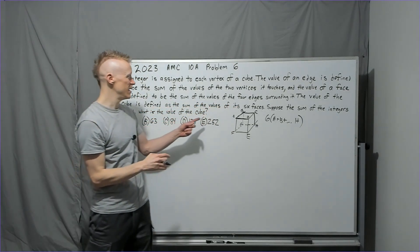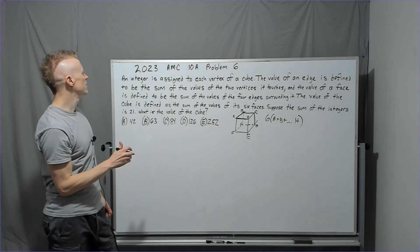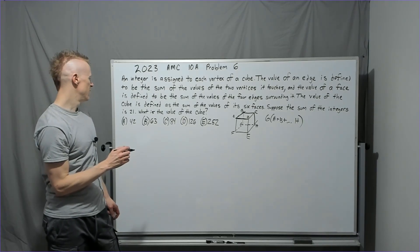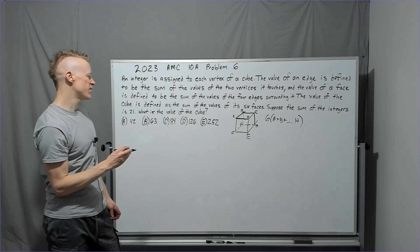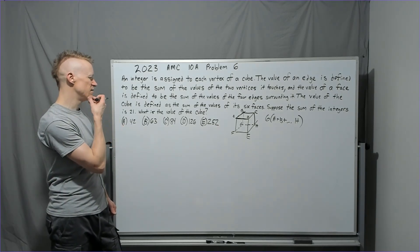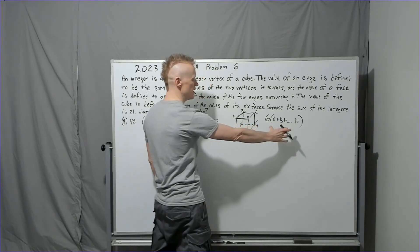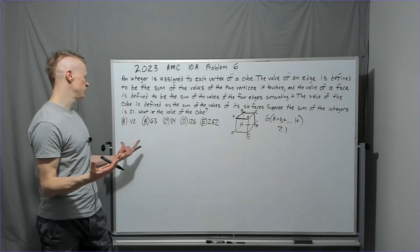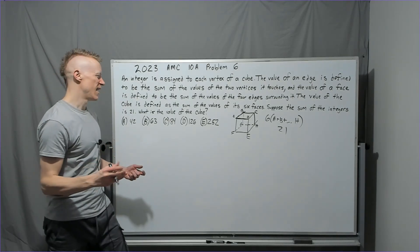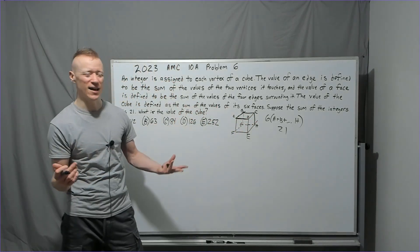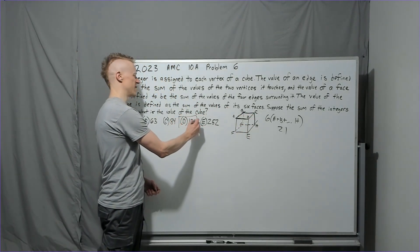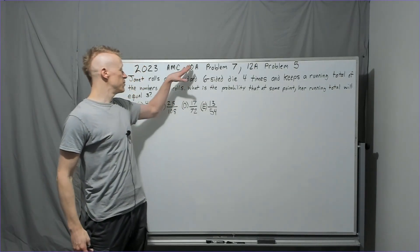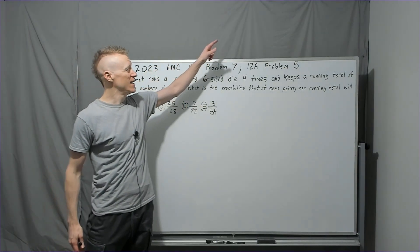Suppose the sum of the integers assigned to the vertices is 21. Each face of the cube has that sum. We don't actually need to find the individual values — you just need to know the total. So it's six times 21, which is 126. That's the answer. On to problem seven.